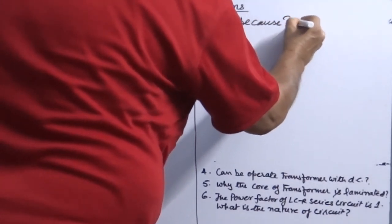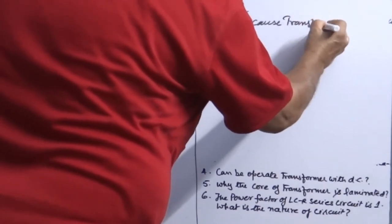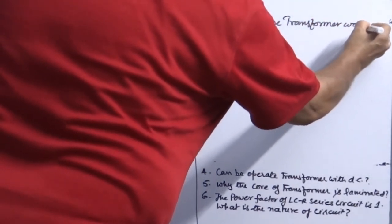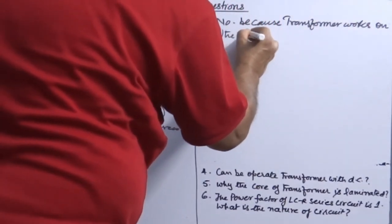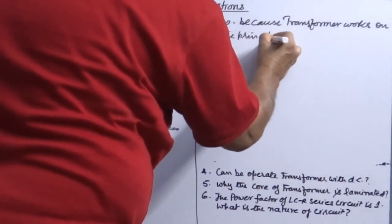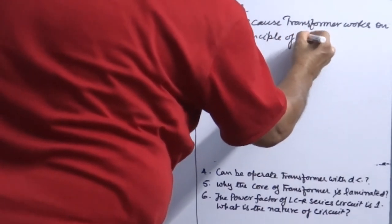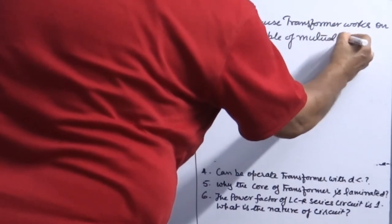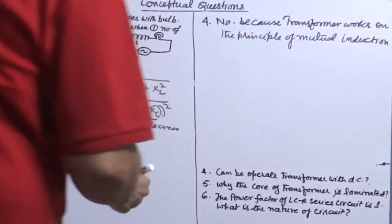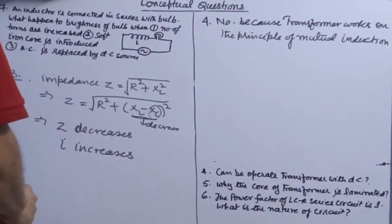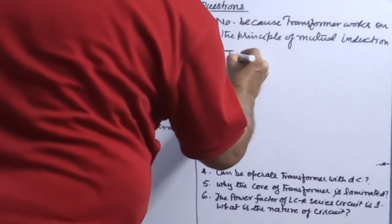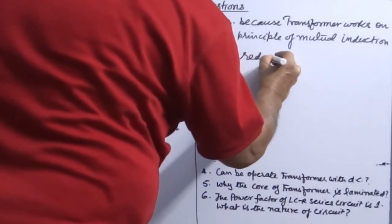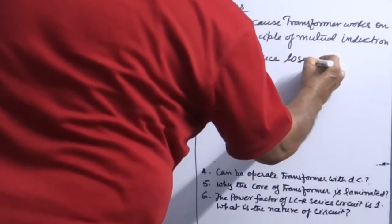Because a transformer works on the principle of mutual induction, and mutual induction cannot be achieved by a DC source. Question number five: why is the core of a transformer laminated? Answer: to reduce loss due to eddy currents.